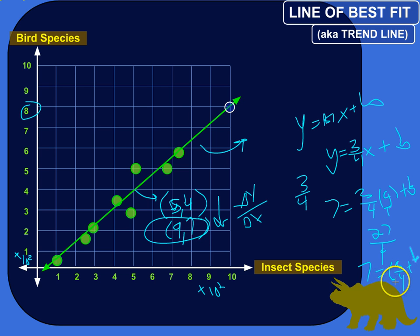So if I subtract 6 and 3 fourths from both sides, 7 minus 6 and 3 fourths is just 1 fourth. So, my b is 1 fourth. So, y equals 3 fourths x plus 1 fourth.